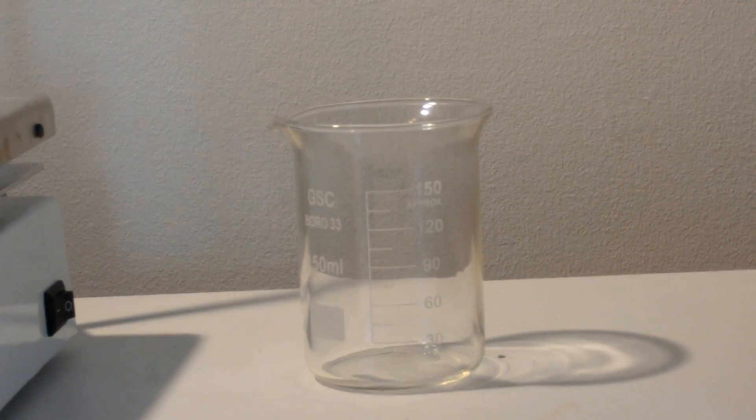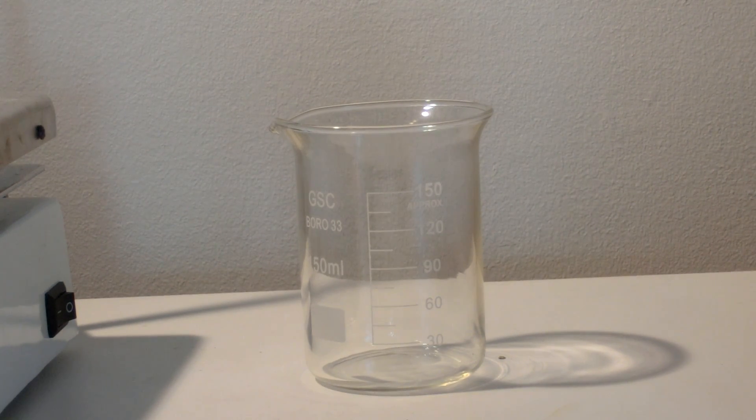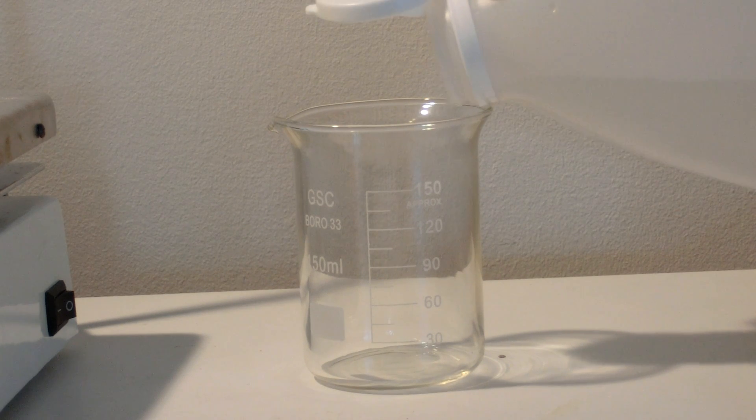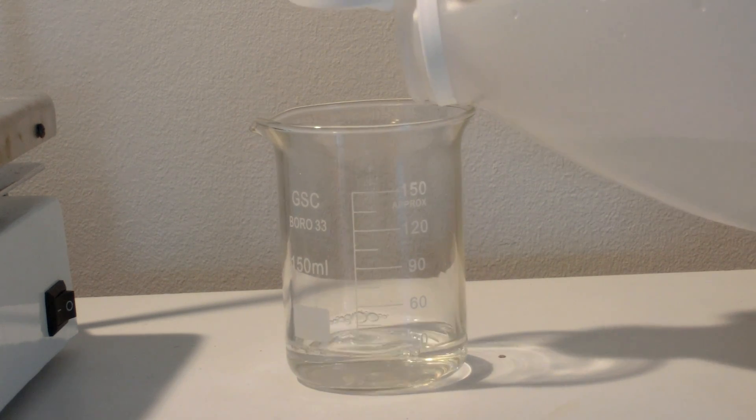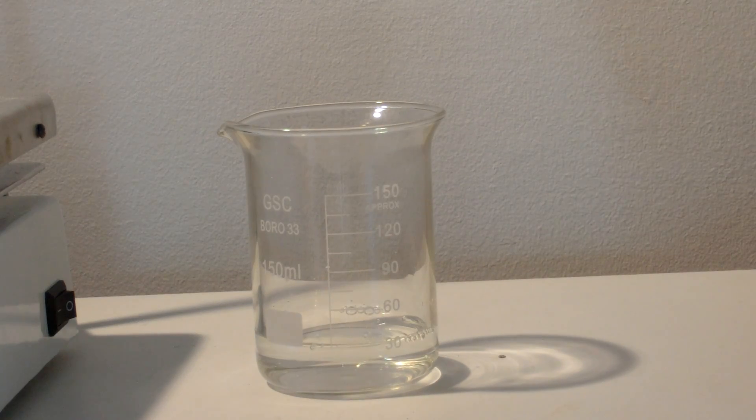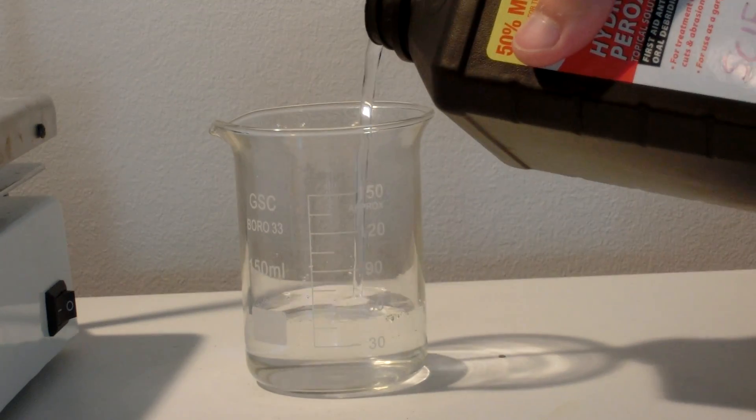Welcome to the Chemikid. In this video, we will make copper 2 acetate. To make copper 2 acetate, first measure out 30 milliliters of household vinegar, then measure out 30 milliliters of household hydrogen peroxide.